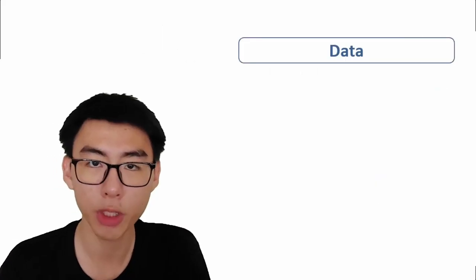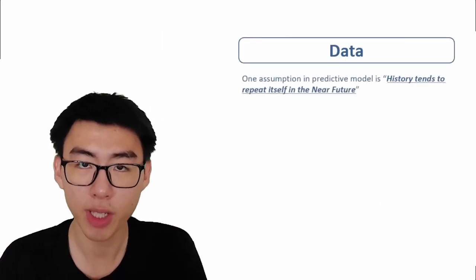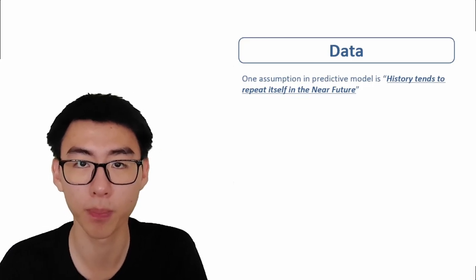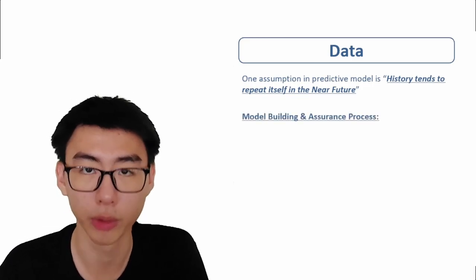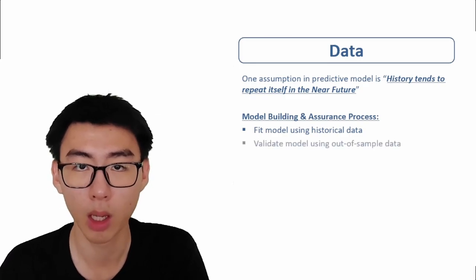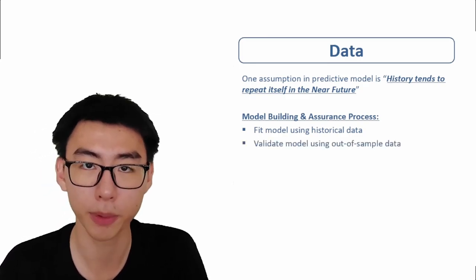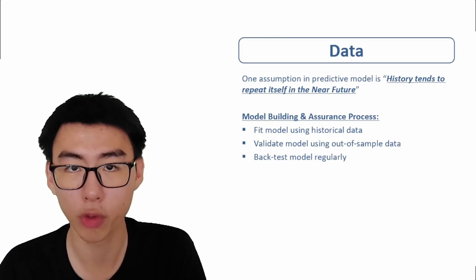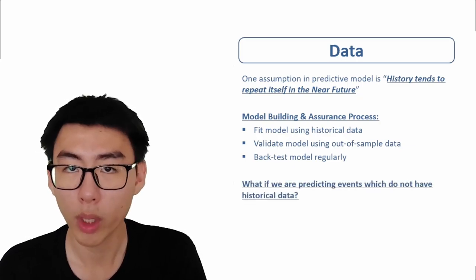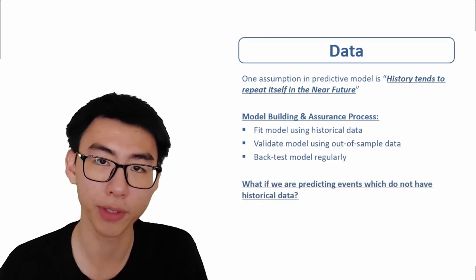The basic assumption in predictive models is that history tends to repeat itself in the near future. In building predictive models, we train the model using historical data, we validate the model using out-of-sample data, and we backtest the model regularly. What if we want to predict events that have no historical data?